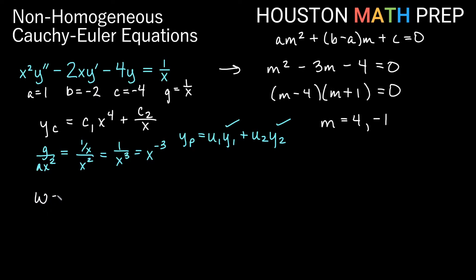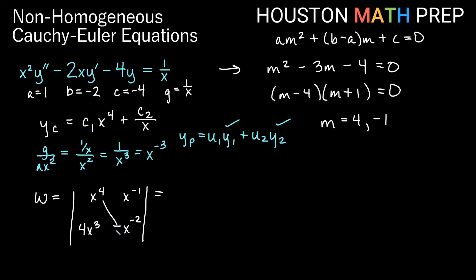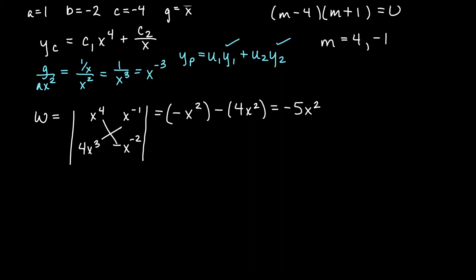Let's compute our Wronskian W. Using y1 equals x to the 4 and y2 equals x to the negative 1, and their derivatives 4x cubed and negative x to the negative 2, the determinant gives us x to the 4 times negative x to the negative 2 minus 4x cubed times x to the negative 1. That's negative x squared minus 4x squared, giving us W equals negative 5x squared.